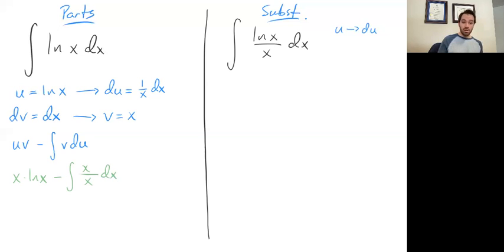So if I multiply v by du I get x over x dx. Well hopefully you won't be too offended if I say that x over x is just the number 1. So I'm going to replace it with the number 1 dx. This integral of 1 dx ends up being x and then we have the infamous plus c. So the final answer here is x times ln(x) minus x and then plus the constant of integration.